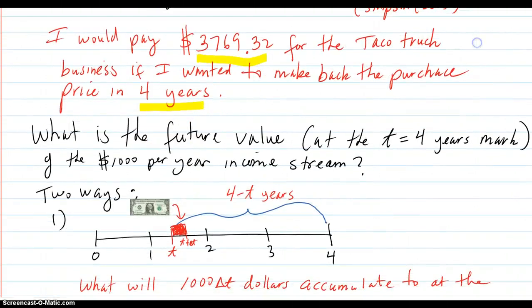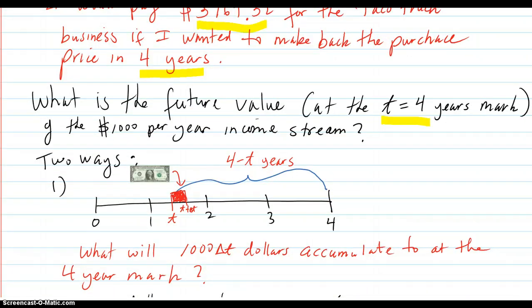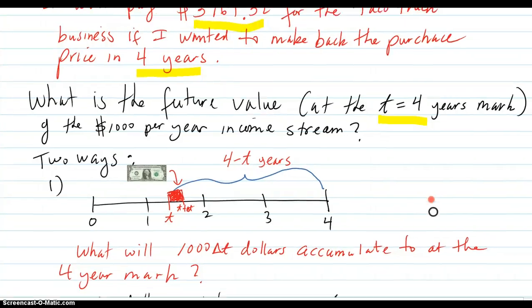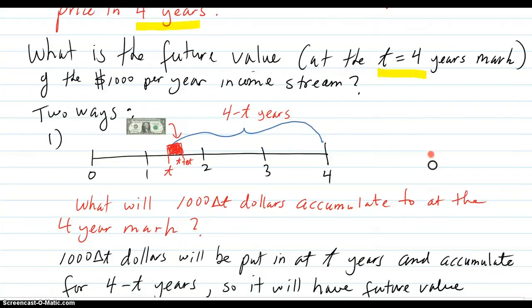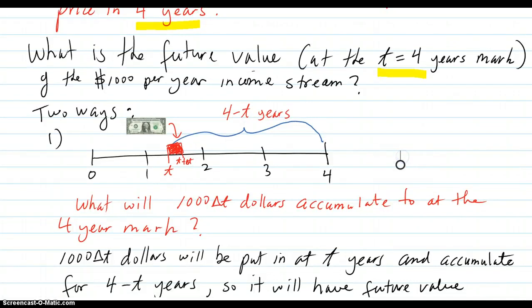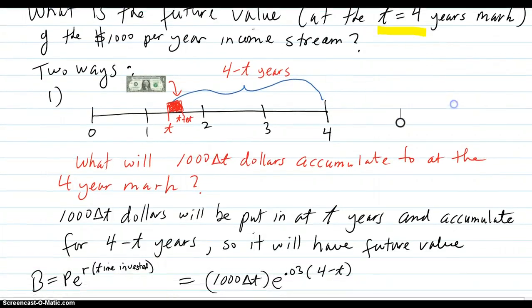What is the future value in case you want to analyze that? At the T equal four year mark of the thousand dollars per year income stream. Knowing that I'm going to make a thousand dollars per year, what will that be worth in the four year mark assuming the same 3% interest rate compounded continuously? Two ways to do it. One, the fancy calculus way.